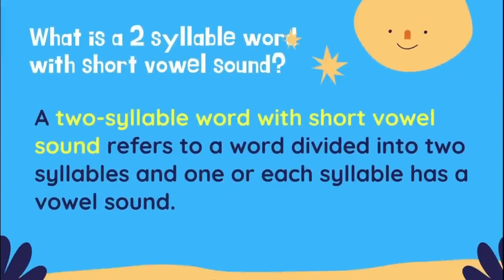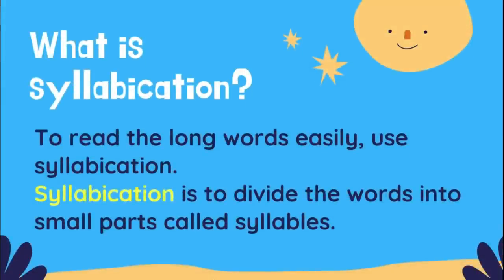What is a two-syllable word with short vowel sound? A two-syllable word with short vowel sound refers to a word divided into two syllables, and one or each syllable has a vowel sound. What is syllabication? To read the long words easily, use syllabication. Syllabication is to divide the words into small parts called syllables.